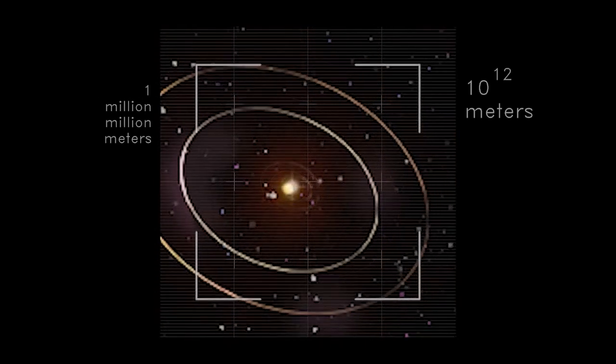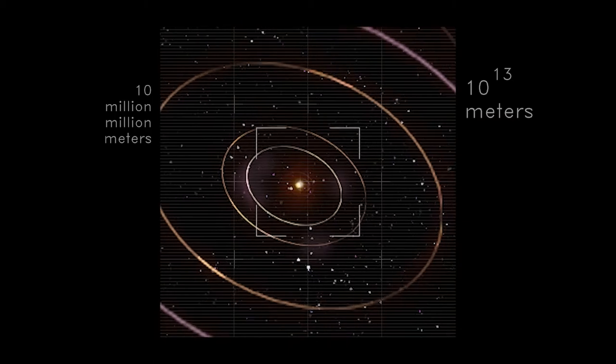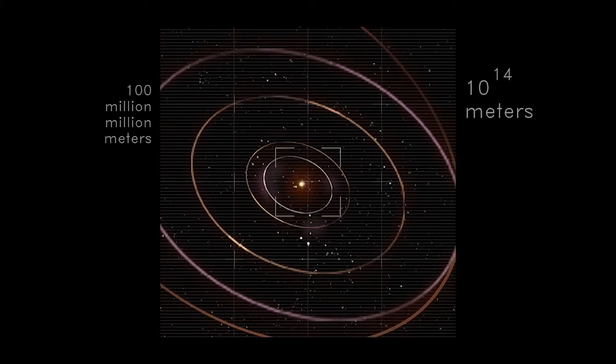As our solar system shrinks, our Sun looks just like the other stars. The holes in the big plank house.